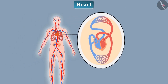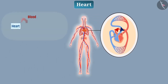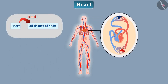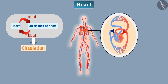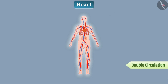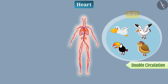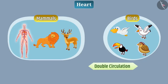The continuous movement of blood from the heart to all the tissues of the body and back to the heart is called circulation. Since blood enters the heart twice in each cycle of circulation, it is called double circulation. Birds and mammals have double circulation.